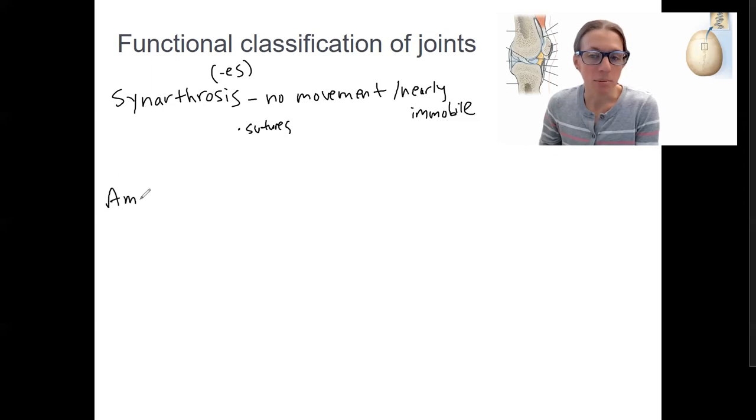Then there are joints that can move a little bit. Amphiarthrosis. Ampi means both. So like amphipathic, they fit into both categories, there's in between. So this is some movement.